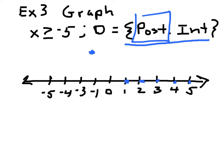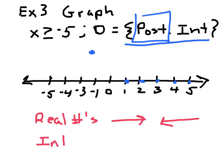A good way to remember this: if the domain is real numbers, you're going to use a solid arrow one way or the other. If the domain is integers, you're just going to use dots. This would be a good thing to write down in your notes.